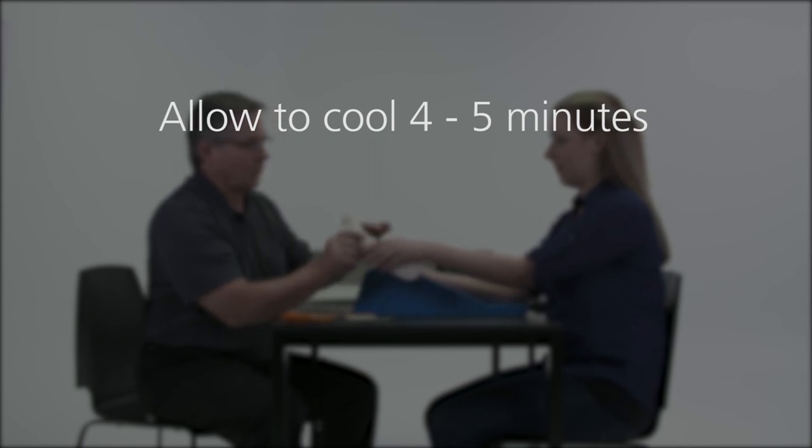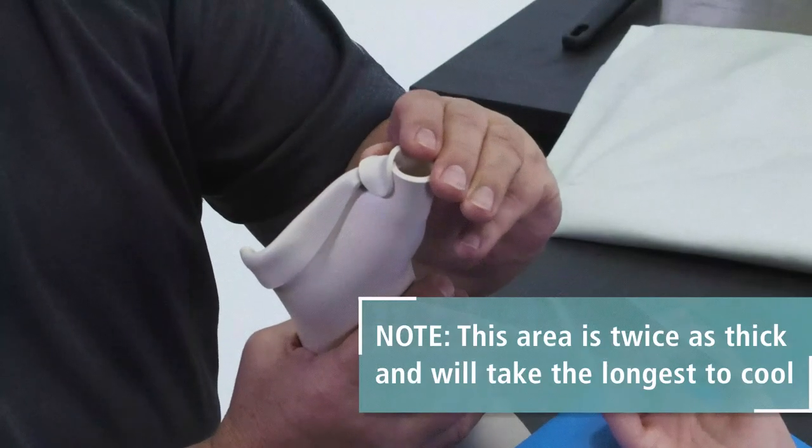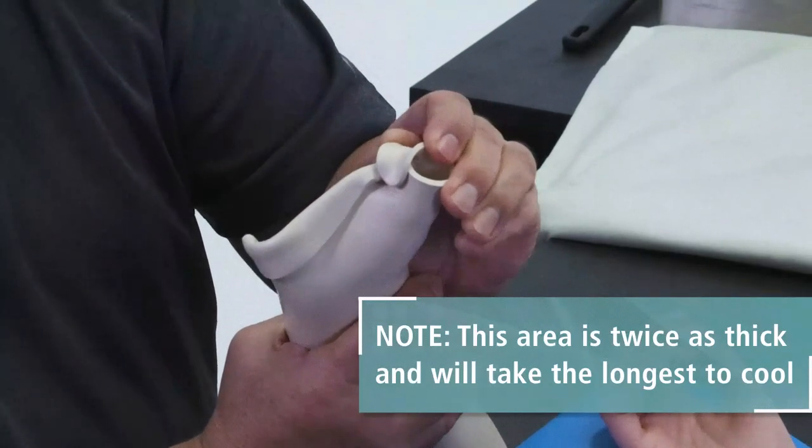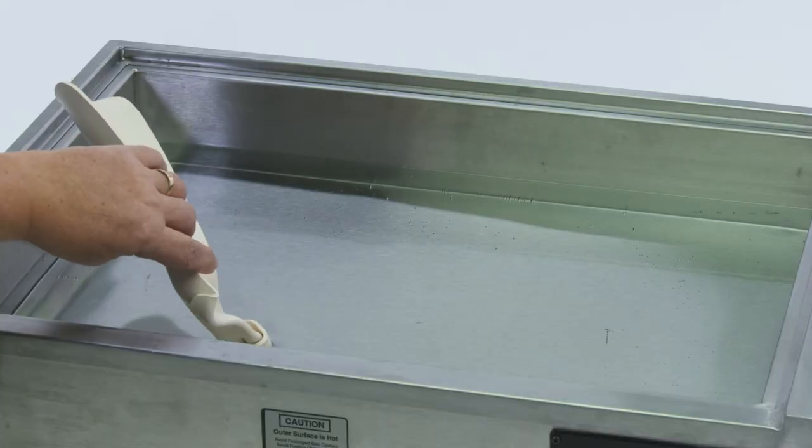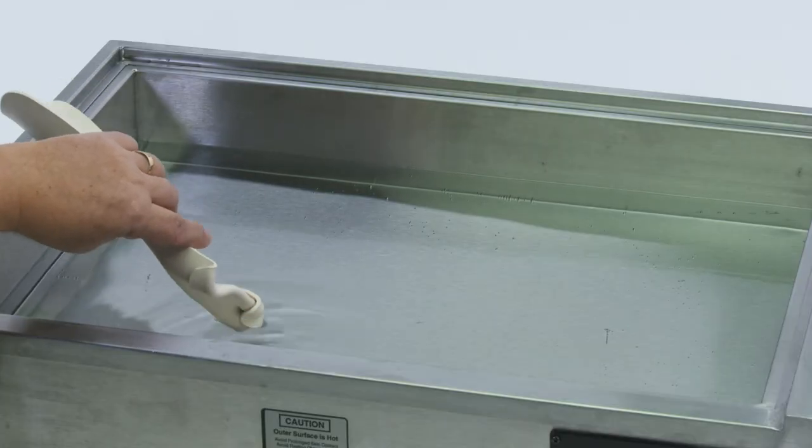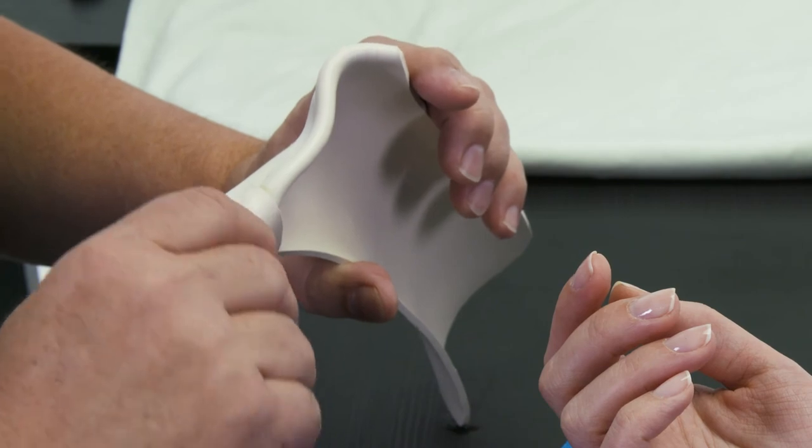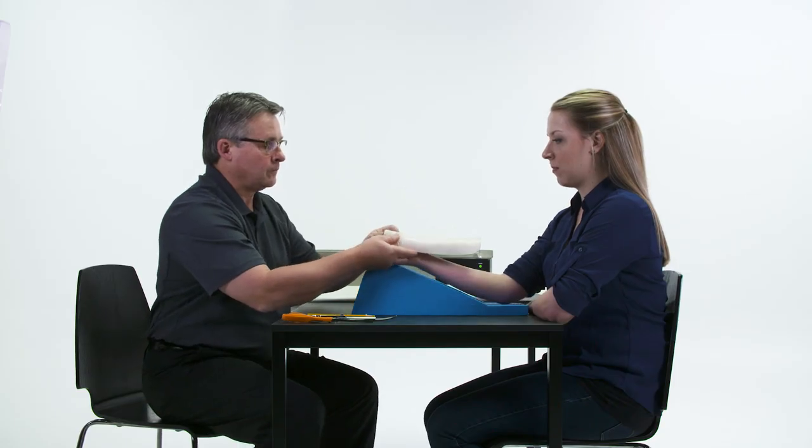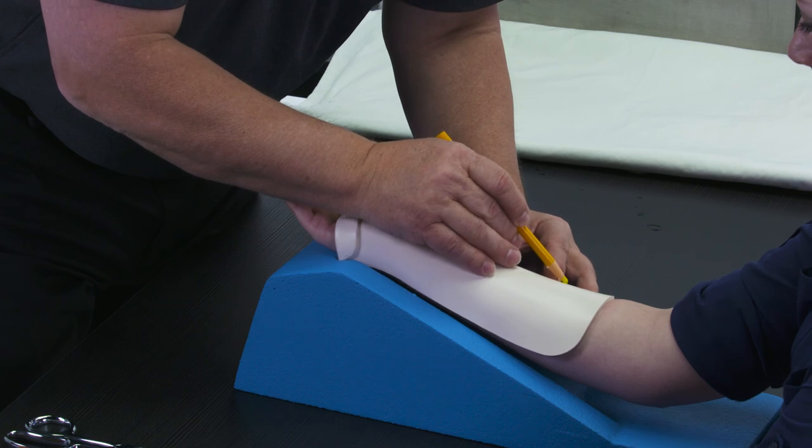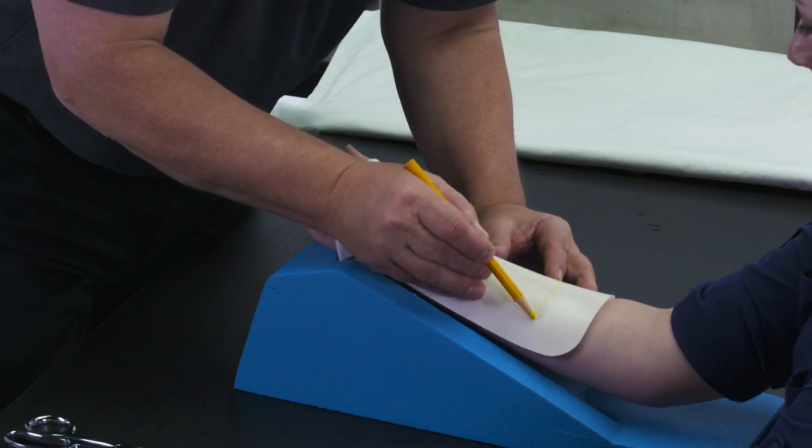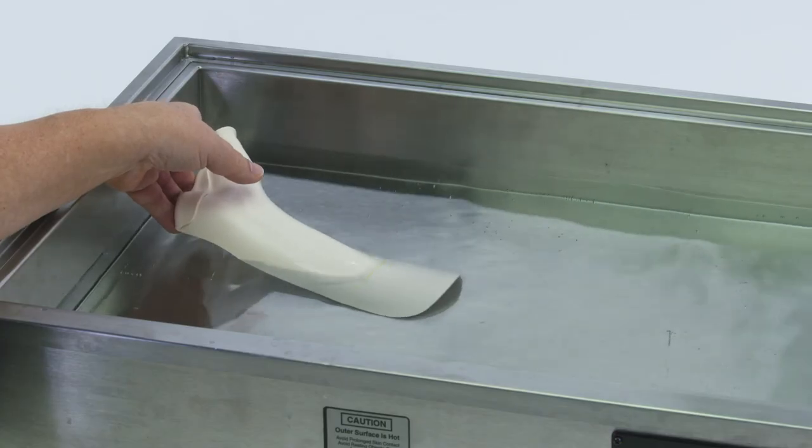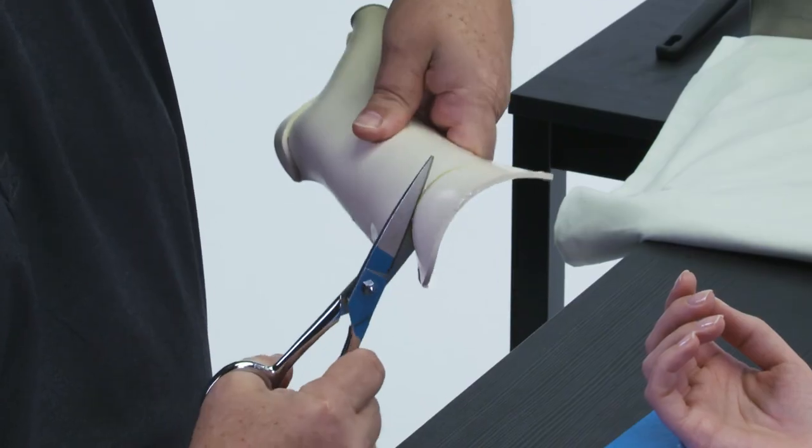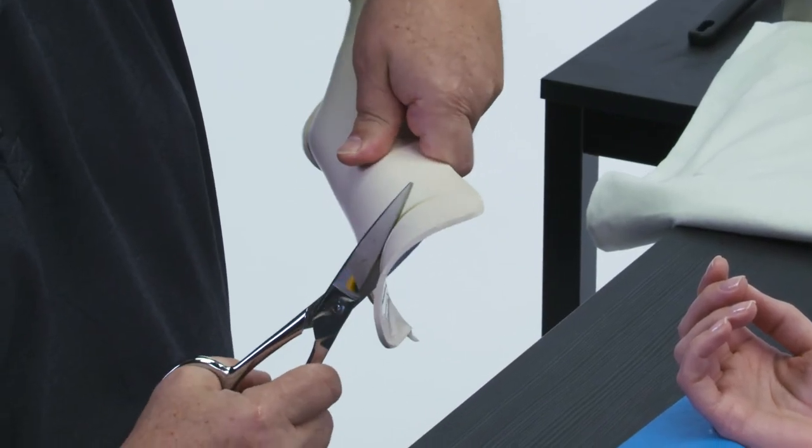Once the splint is completely cooled, the temporary tack at the thumb can be popped open. Dip the distal end of the thumb portion of the splint into the pan for 20 seconds. Use your thumb to finish the edge of the IP border of the splint. The proximal border needs to be ⅔ the way up the forearm and wide enough to be semi-circumferential. Dip the borders of the splint that need to be trimmed for 20-30 seconds and remove excess material.